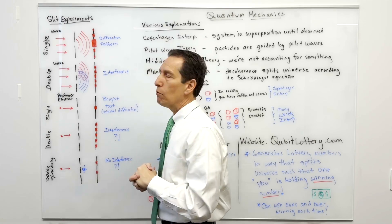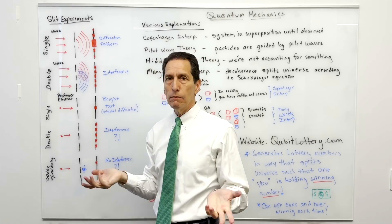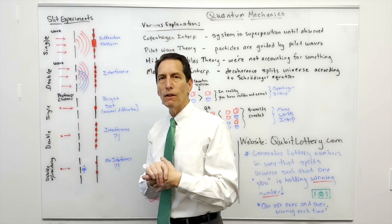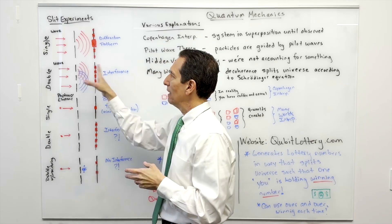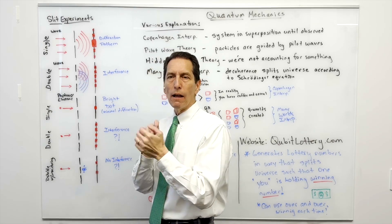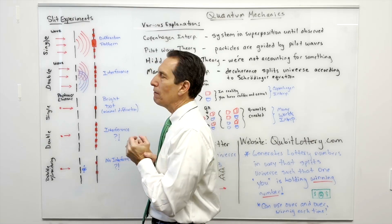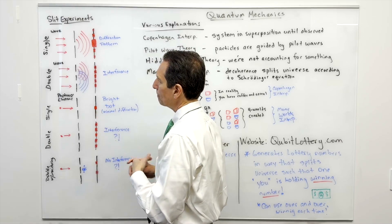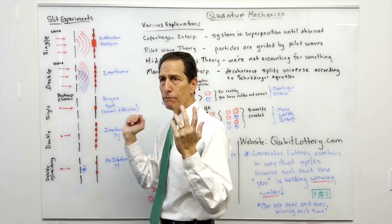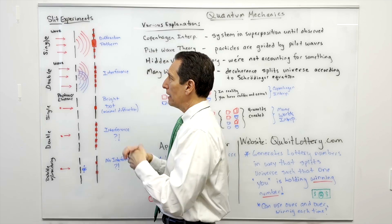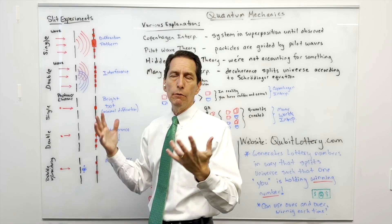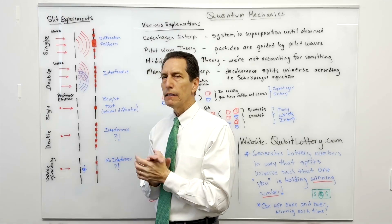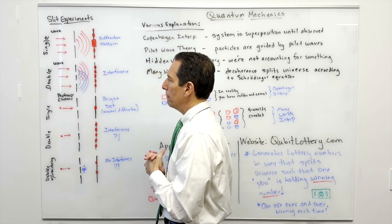This experiment has been repeated by many people. You can even do it at home — I bought a little kit from Amazon for about 19 dollars with a laser pointer and everything. It's fun just to see the interference pattern form. So fine, light is a wave — we accept that. Well, not so fast.